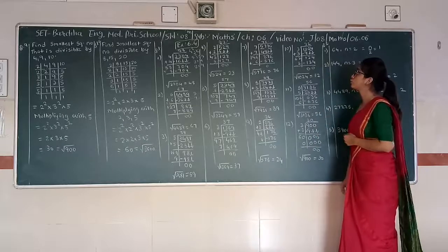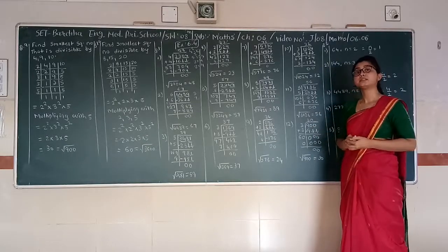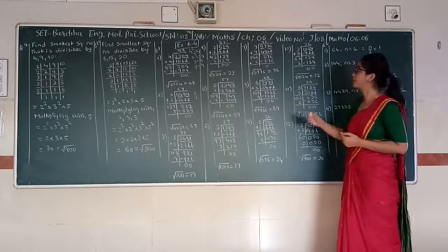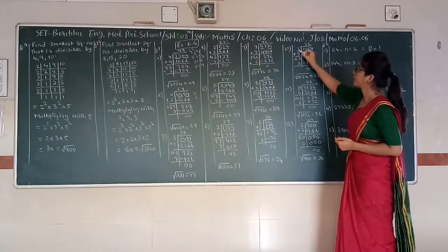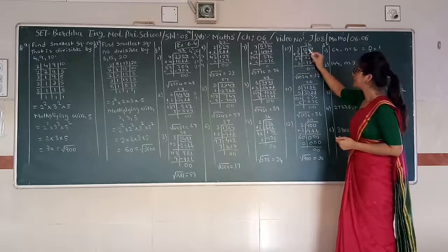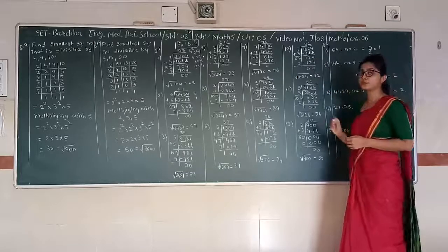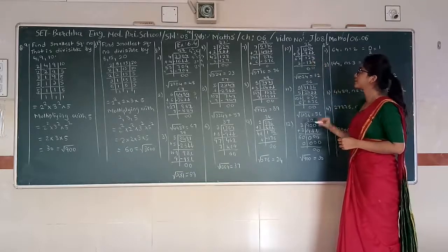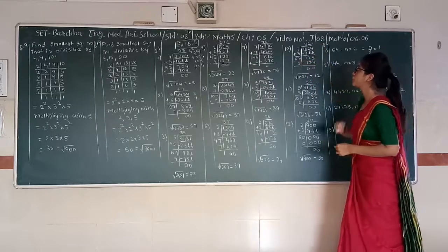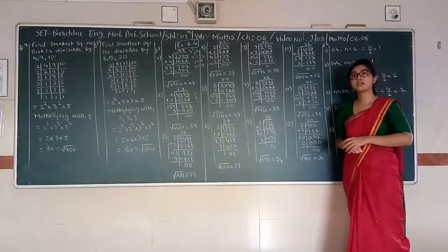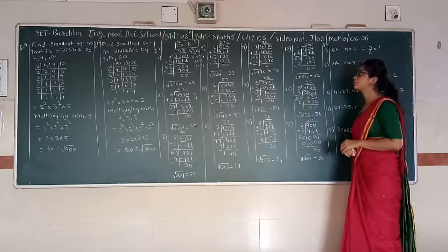Next: 1024. Two pairs: 10 and 24. Nearest perfect square to 10 is 9, which is 3 squared. 3 times 3 is 9. 10 minus 9 gives 1. 3 plus 3 gives 6. Taking 24 downward, we have 124. Unit digit is 4; we take 2. 62 times 2 gives 124. Answer is 0. Therefore, square root of 1024 is 32.